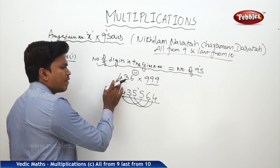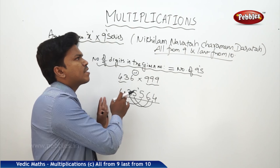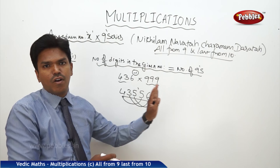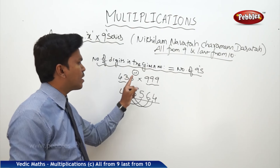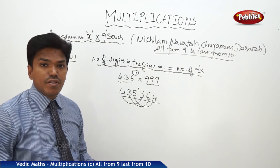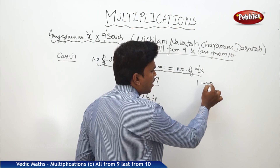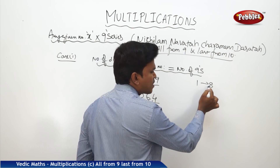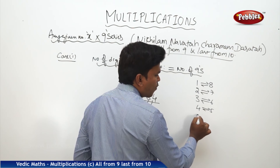Whenever you multiply a given number by a series of nines, if the number of digits are equal to the number of nines, simply subtract 1 from the given number to get 435, then write the sequential 9's complements. The 9's complements are: 1→8, 2→7, 3→6, 4→5, 5→4, 6→3, 7→2, 8→1, 0→9, 9→0.